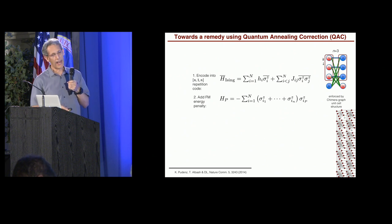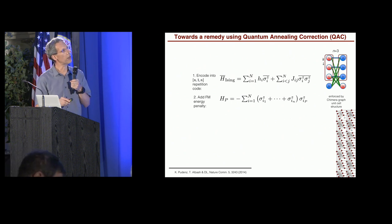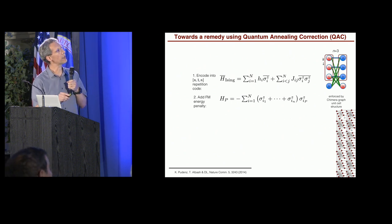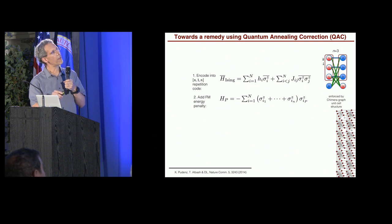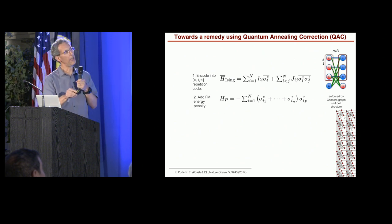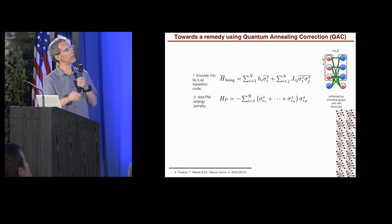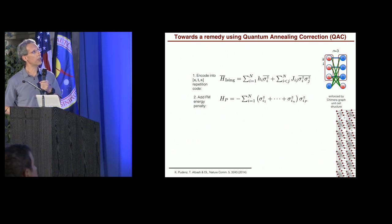And then we add, we do, we go beyond the repetition code, we add a penalty term. This is the quantum part of this construction. So the penalty term has the three data qubits coupled to an extra penalty qubit, and they're coupled ferromagnetically. And so this induces a penalty against these three flipping because if one of them wants to flip, then it has to also flip the extra penalty qubit. So we add this penalty term.